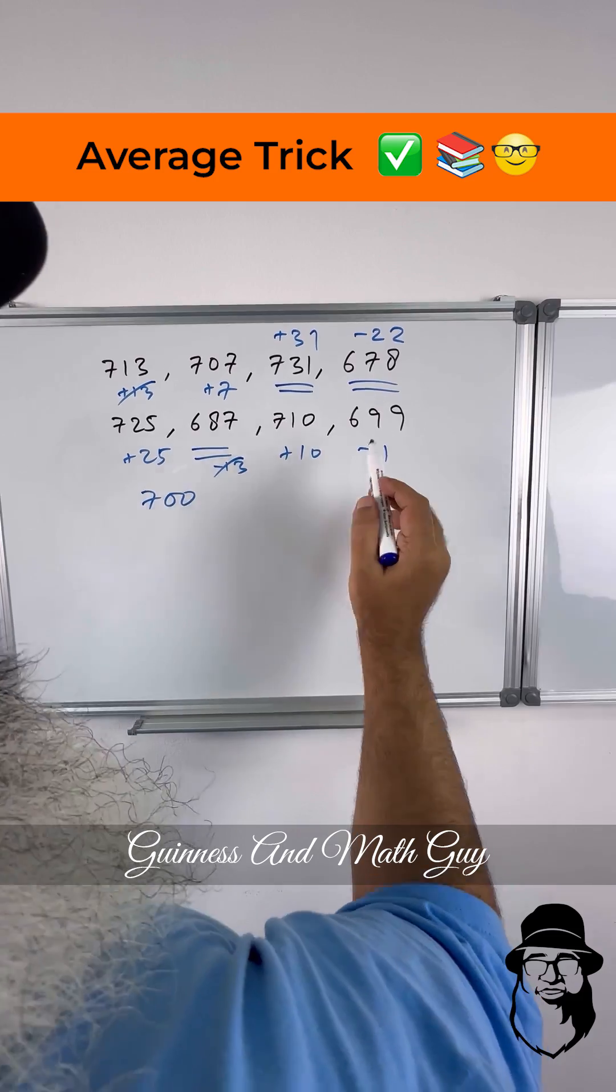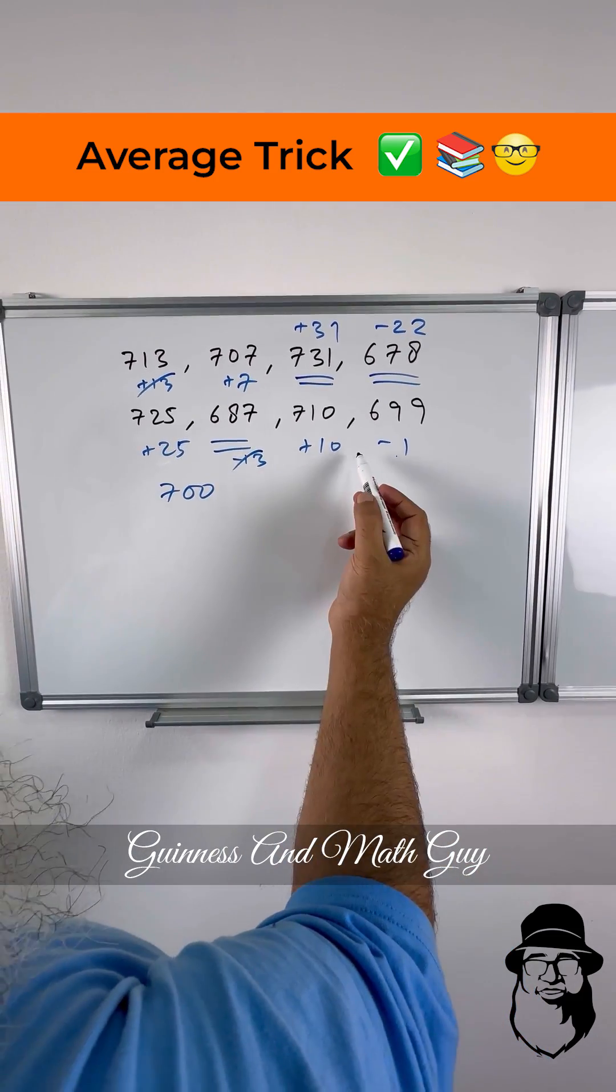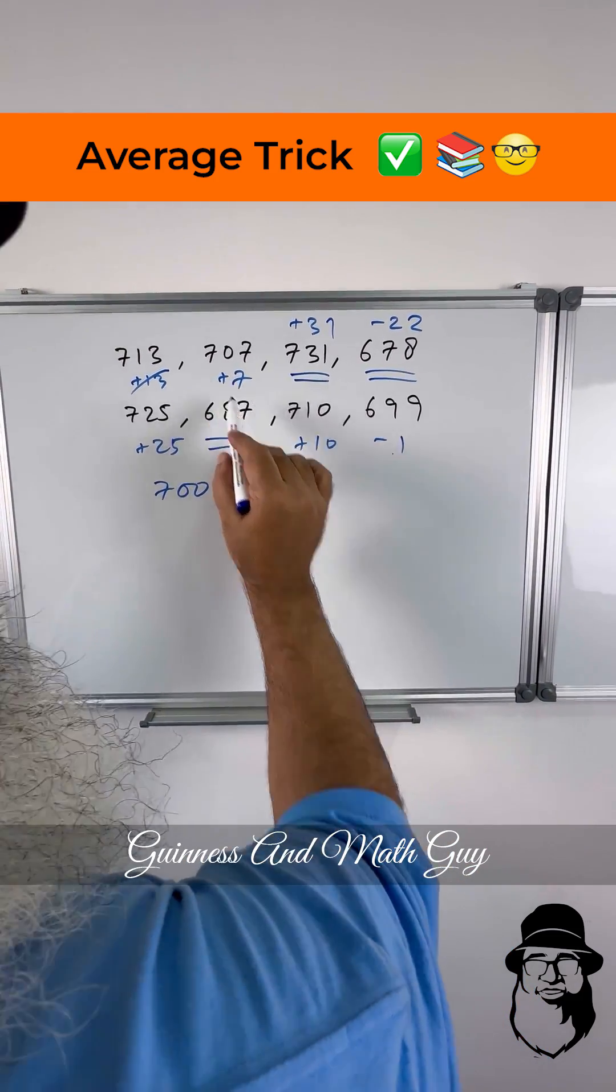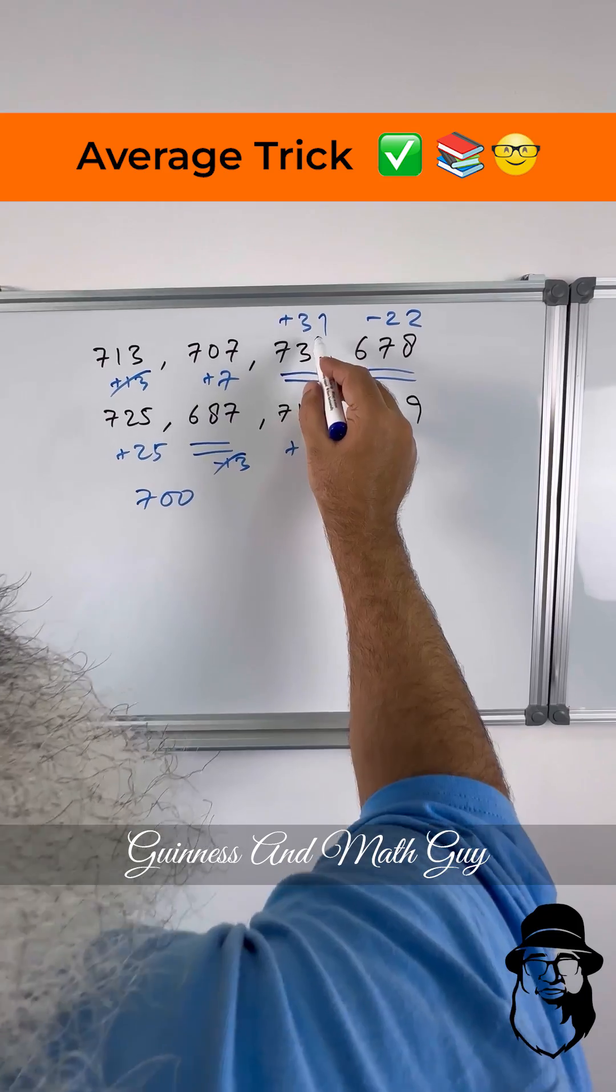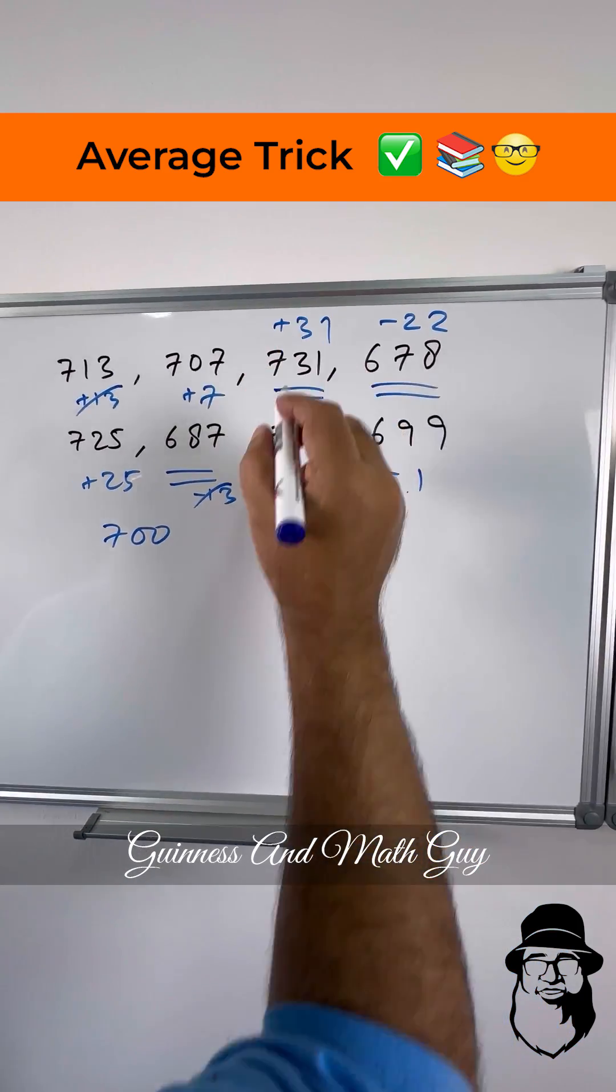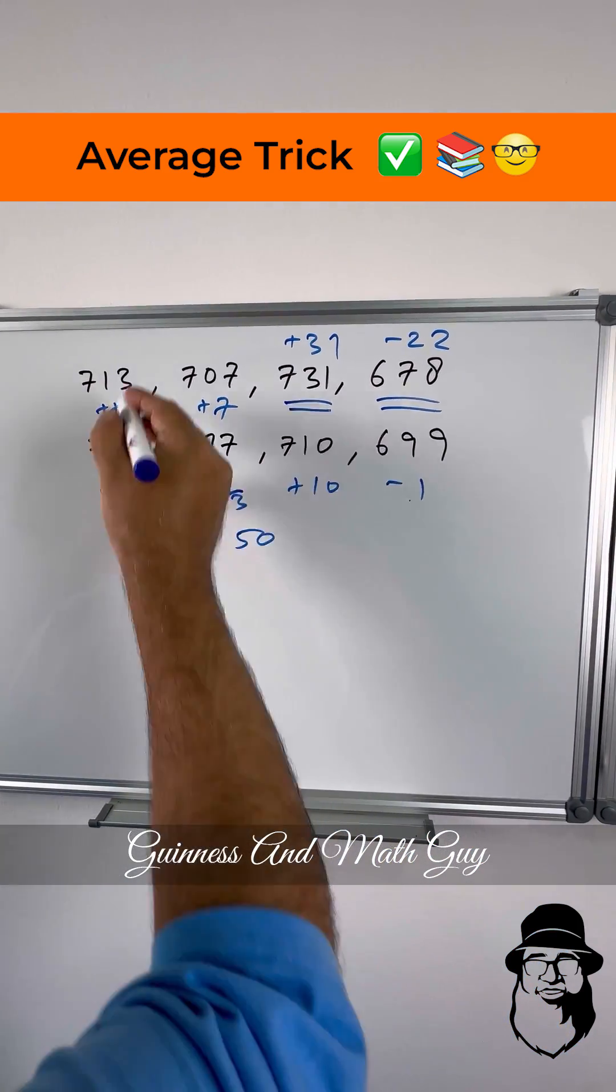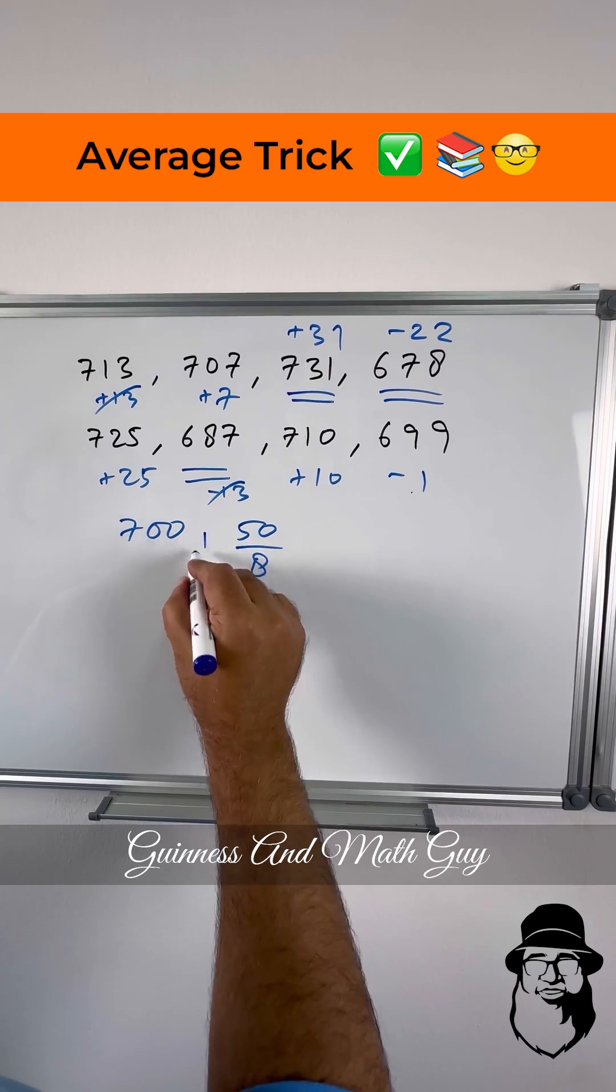And minus 1 is minus 23. 25 minus 23 is 2. 2 plus 7 is 9. 9 plus 10 is 19. Plus 31 is 50. So we have 50 divided by eight numbers and we add it to 700.